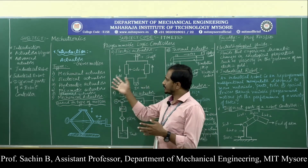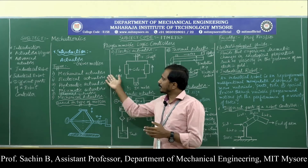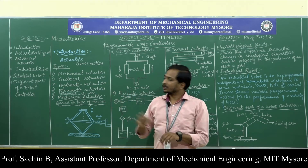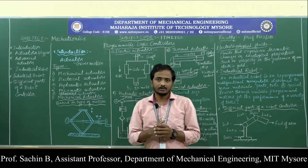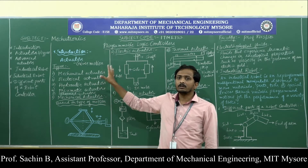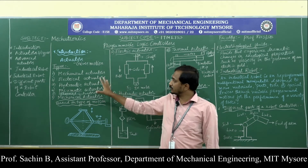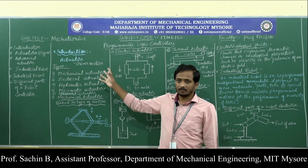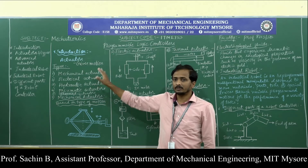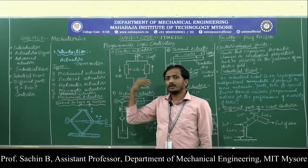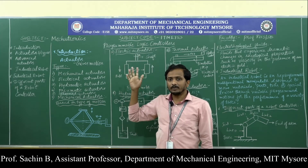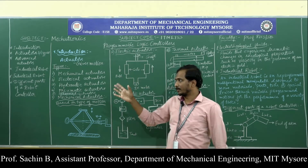There are five basic types of actuators: mechanical actuators, electrical actuators, hydraulic actuators, pneumatic actuators, and thermal actuators. This classification is purely based on the type of energy source being used. If we go for other types, the linear and rotary classification comes in, which depends purely on how they perform.